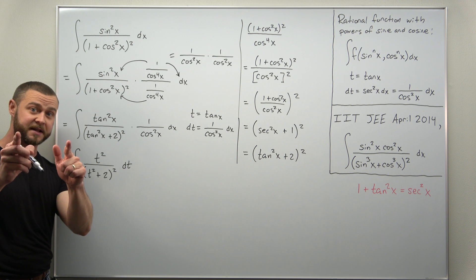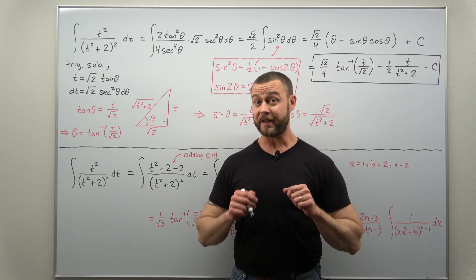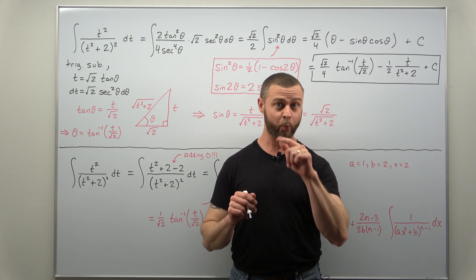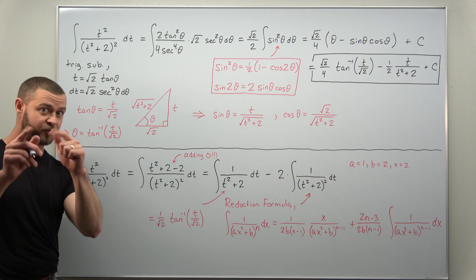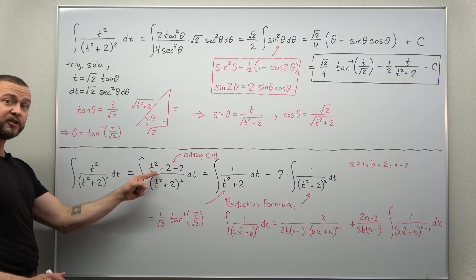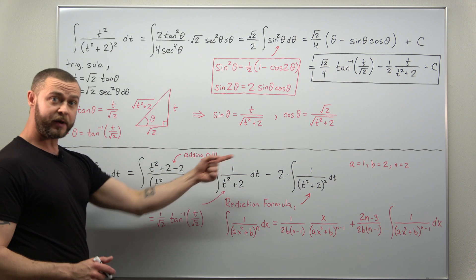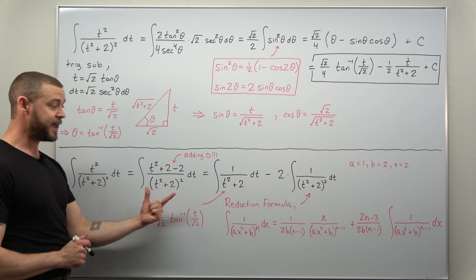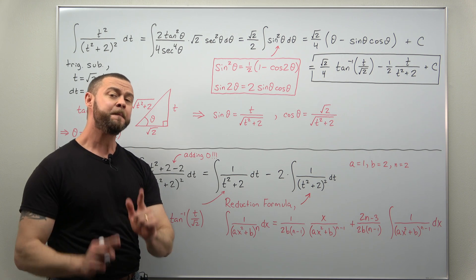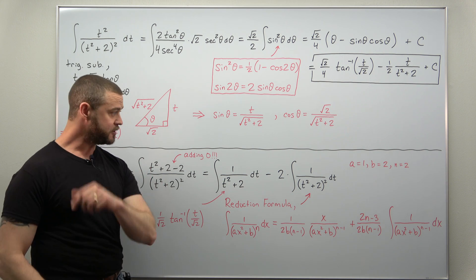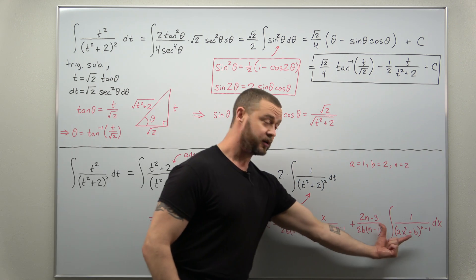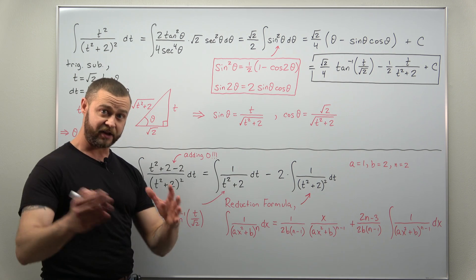The resulting rational function integral in terms of t is not fun to evaluate — no art, just brute force work. There are two approaches, one of which involves a little creativity: we can add zero to the numerator by writing t squared as t squared plus two minus two. Splitting into two integrals, the t squared plus two terms cancel giving a straightforward inverse tangent, while the other integral requires an integral reduction formula. Applying values a equals one, b equals two, and n equals two to that formula leads to another inverse tangent, and combining everything gives the end result.